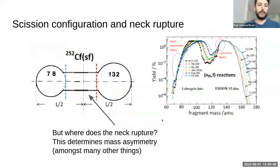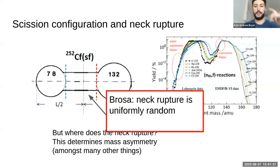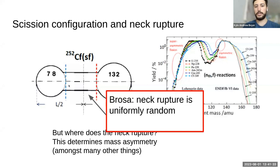A question that arises: where does the neck rupture? Is it going to rupture over here or over here? This will determine the mass asymmetry and the neutron multiplicities as a function of fragment mass. There are a variety of different models. The BROSA model is a macroscopic, nuclear liquid treatment that says the neck rupture is completely uniform and random. This is an okay model — it describes the bulk properties observed in fission pretty well.